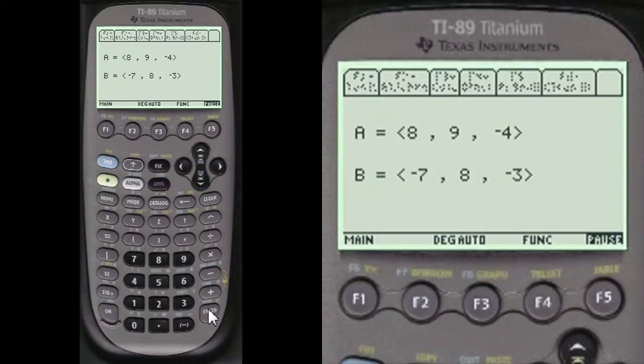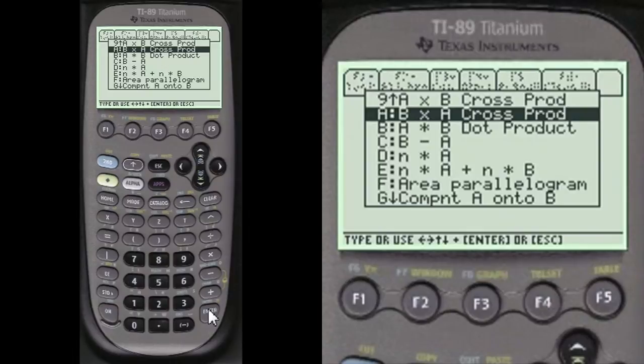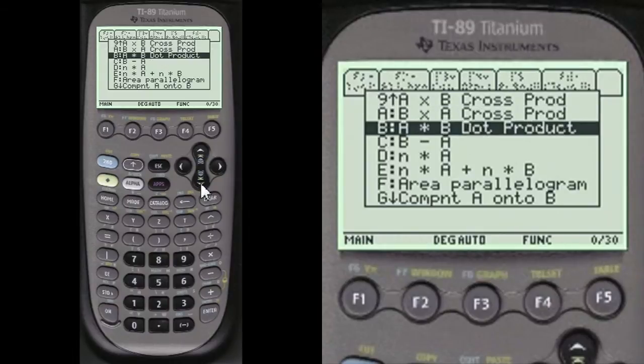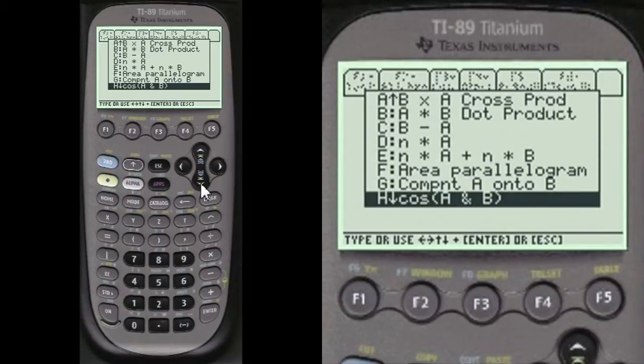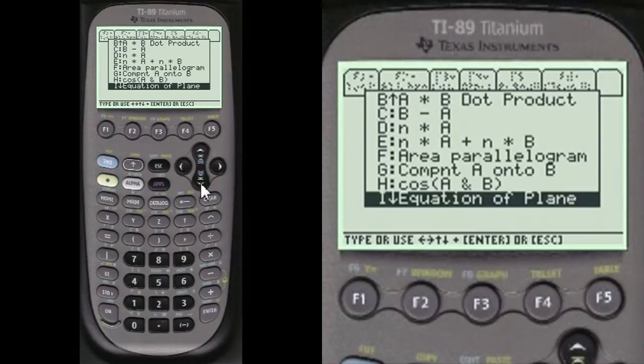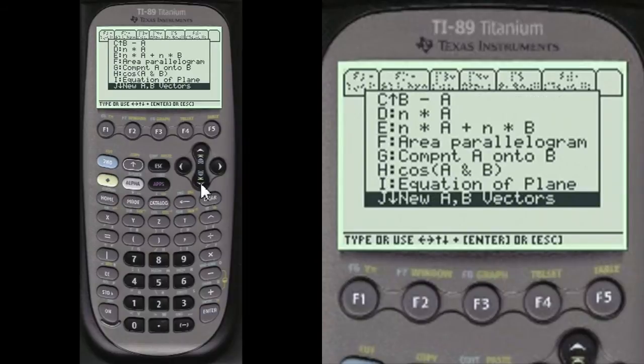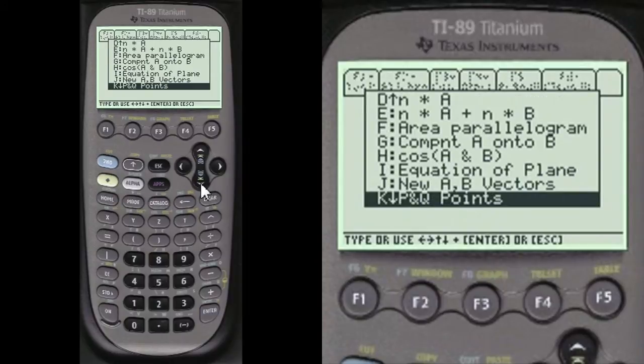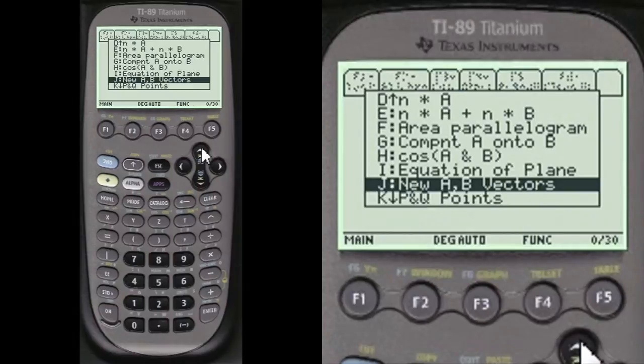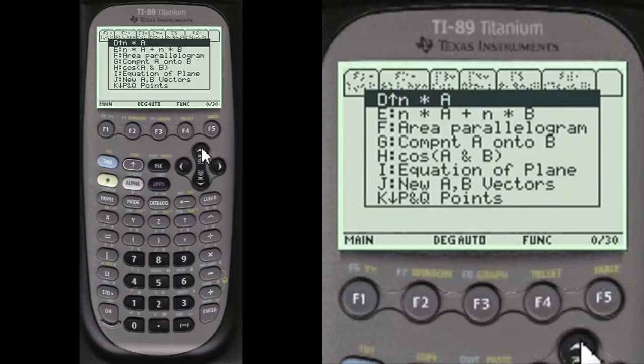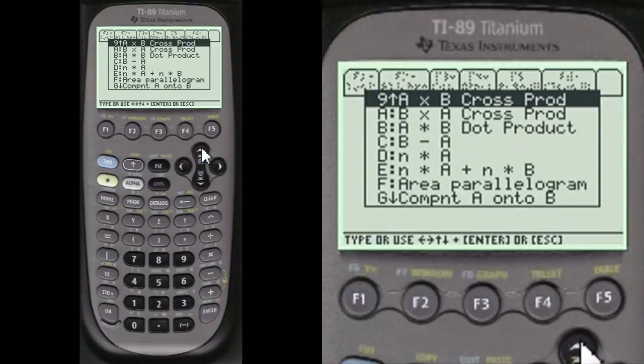I always show you what you've entered. You can change it if you want. Say it's ok. We're going to scroll down to cross product. There's cross product. Cross A, A times B cross product, and B times A cross product. Whichever one, they're different. We're going to do A times B.